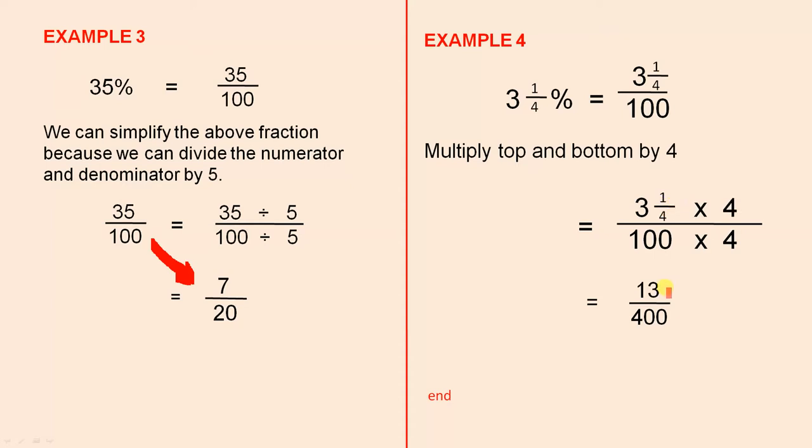3 and a quarter times 4 gives us 13, because 4 threes are 12, and 4 times a quarter is 1, and 12 plus 1 is 13, and 4 times 100 is 400. So 3 and a quarter percent is actually 13 over 400.